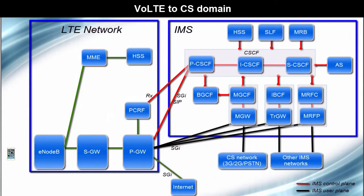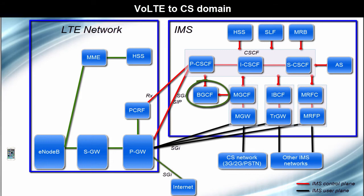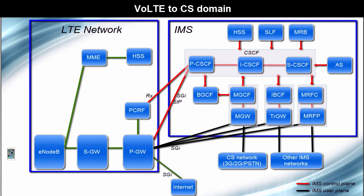VoLTE to CS domain. For calls originating in the LTE network and breaking out to the CS network, the originating SCSCF will recognize that the call termination is in the CS domain and will invoke a BGCF. If the breakout is to occur in the CS domain of the same network in which the BGCF is located, the BGCF will select a MGCF which will be responsible for the interworking with the CS network. If the breakout is to occur in the CS domain of some other network, the BGCF will forward this session signaling to another BGCF in the selected network. Note: voice traffic is sent between the VoLTE UE and the CS network via the IMS media gateway.